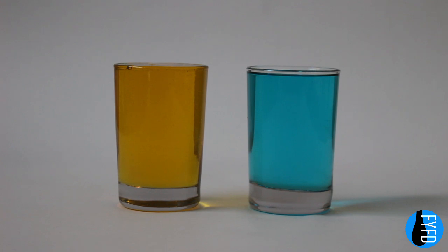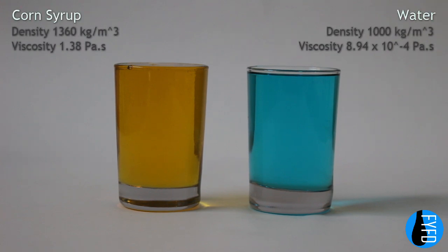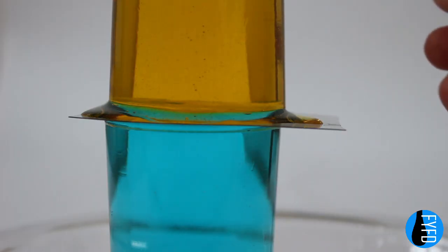Here I filled two cups with a mixture of corn syrup and water. Corn syrup is only a little denser than water, but it's about a thousand times more viscous. If you do the full mathematical analysis of the Rayleigh-Taylor instability, viscosity does have some effects, but mostly what it does is decrease the growth rate of the instability. In other words, it slows everything down. The yellow glass contains the denser mixture.